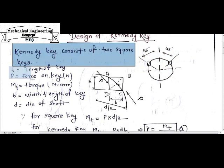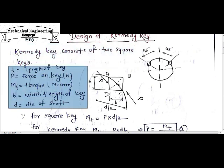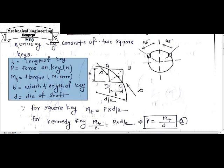Here I am considering different notation to design a Kennedy Key. L is the length of the key, P is the force on a key in Newton, MT is the torque transmitted in Newton-mm, B is the width and height of the key because we basically use a square key in design of Kennedy Key. So in a square key, we know that height and width are equal. Small d is the diameter of the shaft.